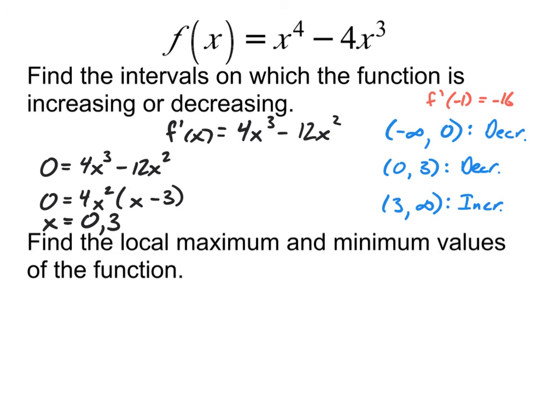But I do see a location where it changes from decreasing to increasing. That happens at 3. And so if it changes from decreasing to increasing, that is a local minimum, and that would happen there at x equals 3.